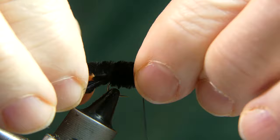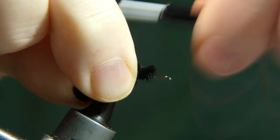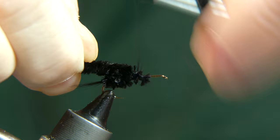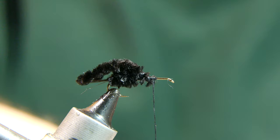Take the excess chenille, fold it backwards creating a little loop on the back of the fly, and tie everything in. When you tie it in, make sure that both sections are parallel to each other and sitting right on top of the hook.